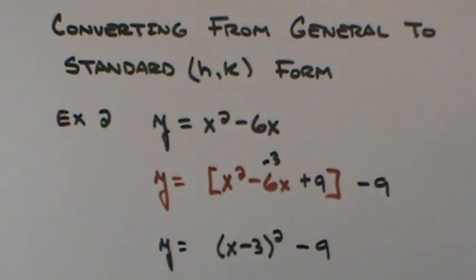From that form, I can glean some information. I have a vertex that would be located at 3, negative 9. Because the a value is 1, I know it's going to open upward. It's positive. And because it was 1, it's a standard opening.